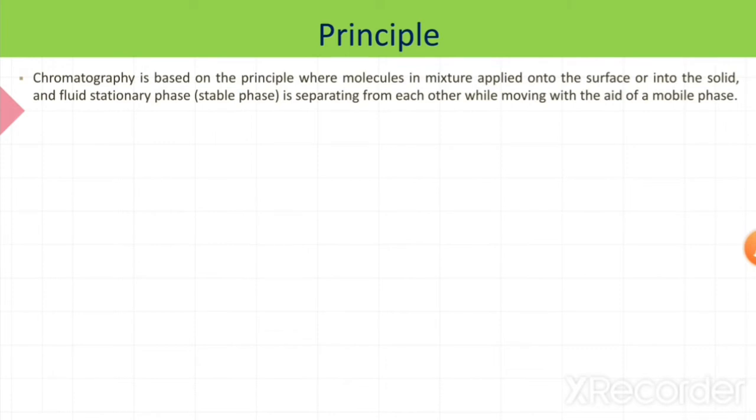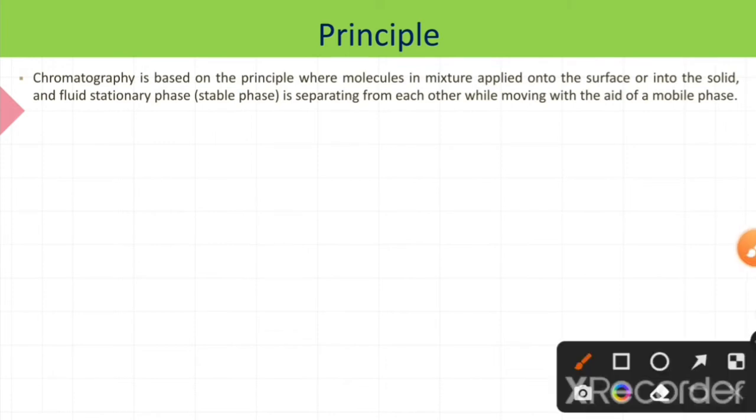Now what is the principle? The chromatography principle is totally based on two phases. First phase is stationary phase which is called a stable phase, another one is mobile phase. The sample we have, that mixture we are going to put on a chromatography paper. This paper we are going to put through the two phases, stationary phase and mobile phase. The sample will flow through these two phases and at the end you will get the different components from the mixture of samples.